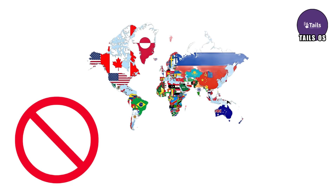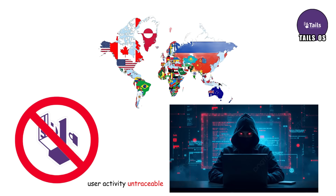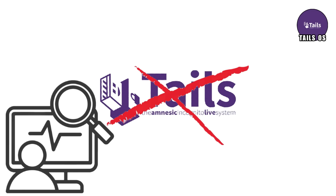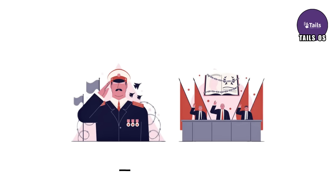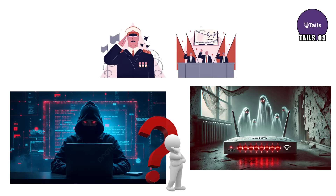Several countries moved to restrict or ban the use of Tails because it makes user activity untraceable. It wasn't that the OS was dangerous — it was that its invisibility made monitoring impossible. For regimes that rely on control, an untraceable computer is basically a ghost with Wi-Fi.